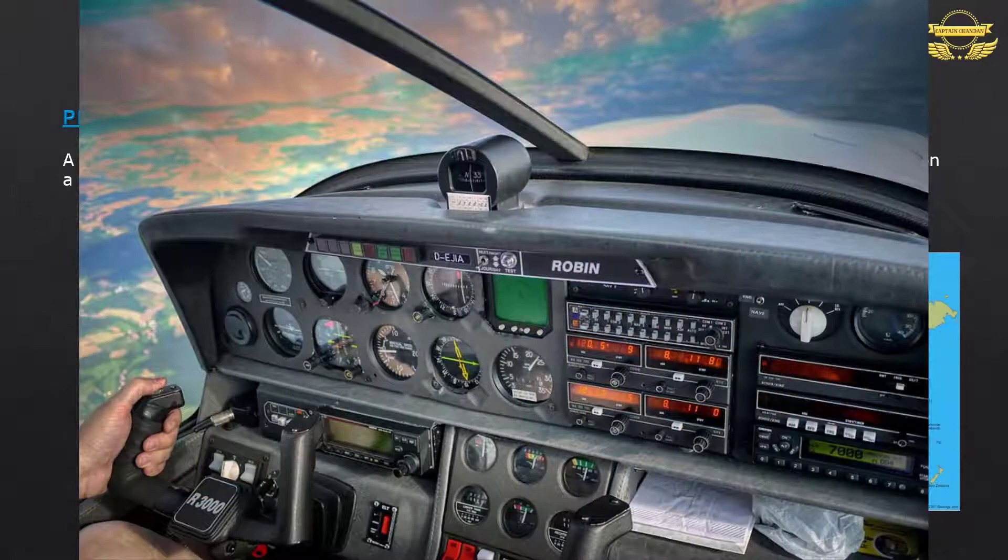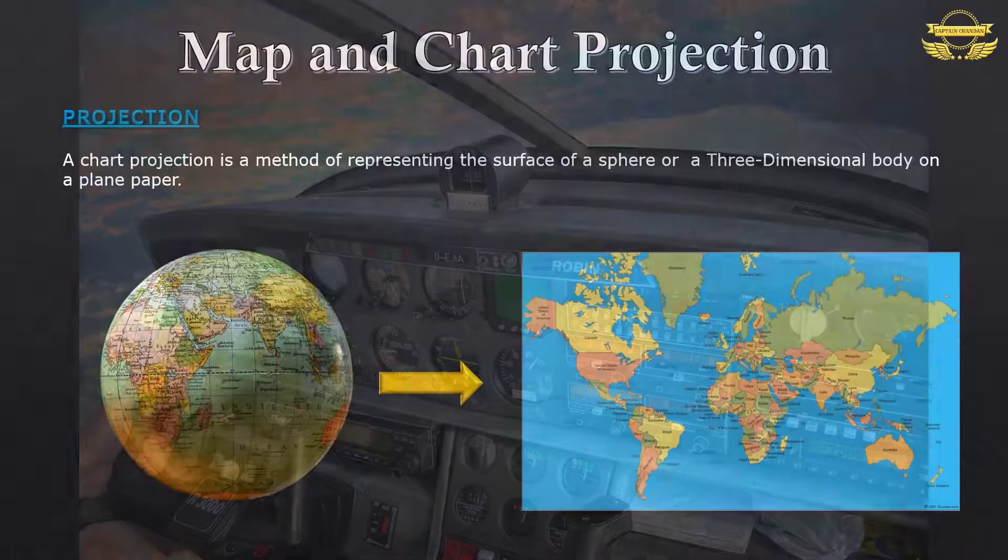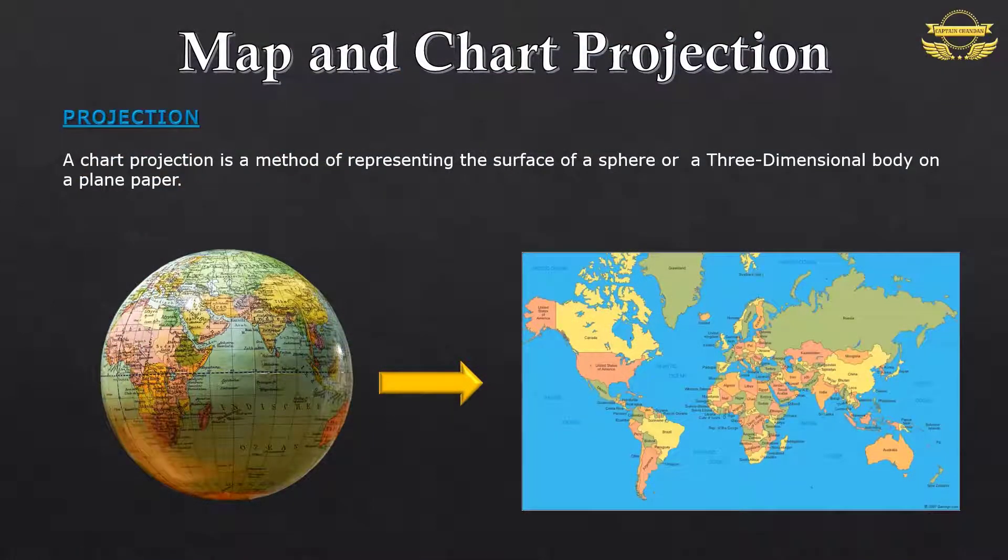You cannot carry a globe in a cockpit to navigate an aircraft. You need all the features of a globe on a plane paper so that it will be easy to calculate distance and direction.